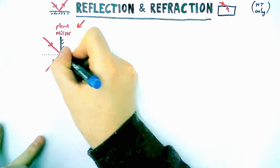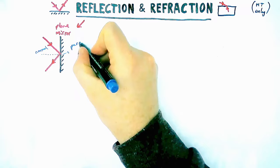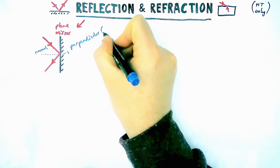Now in the diagram I'm drawing, a light or another wave hits a mirror we call it a plane mirror, p-l-a-n-e, meaning a flat mirror, and it bounces off.